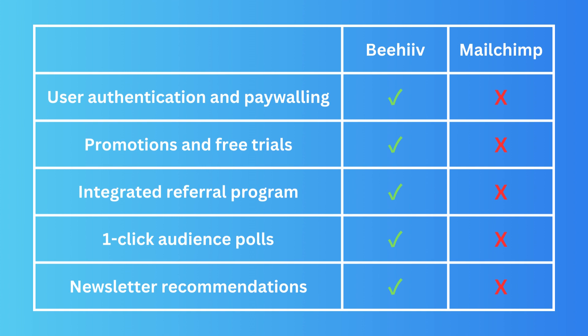One-click audience polls are another Beehiiv feature not in Mailchimp. You can ask your audience a question — like 'Which company is better, Apple or Samsung?' — directly in the email, and readers can vote with one click. You can then view the poll analytics easily. Newsletter recommendations are also available in Beehiiv but not Mailchimp.